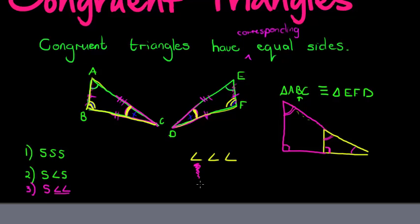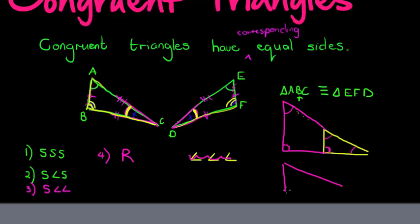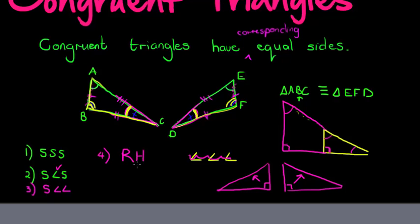Three angles are not sufficient to show congruence. The fourth criterion: if I have a right-angle triangle. With two right-angle triangles, before I would need the inclusive sides, but with a right-angled triangle it's sufficient if I have the hypotenuse and any other side. So the hypotenuse doesn't have to be the inclusive side — it just needs to be the hypotenuse and any other side.